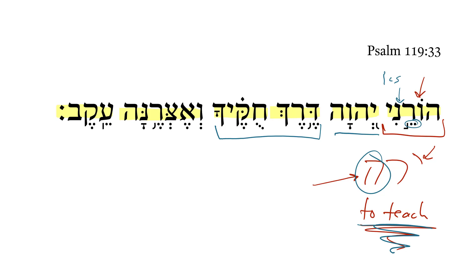We have the construct package here indicated by the conjunctive accent on that Segol. Remember, singular Segolates in the absolute and the construct are identical in form, so that accent tells us we're looking at a construct package here — the way of your statutes.